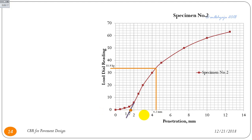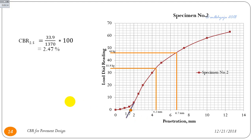For the 5 mm penetration in Sample 2, the corrected penetration is shifted to 6.7 mm, and the respective load is determined from the graph as 46 kg. Therefore, the corrected CBR at 2.5 mm is 2.47%, and the corrected CBR at 5 mm is 2.24%.